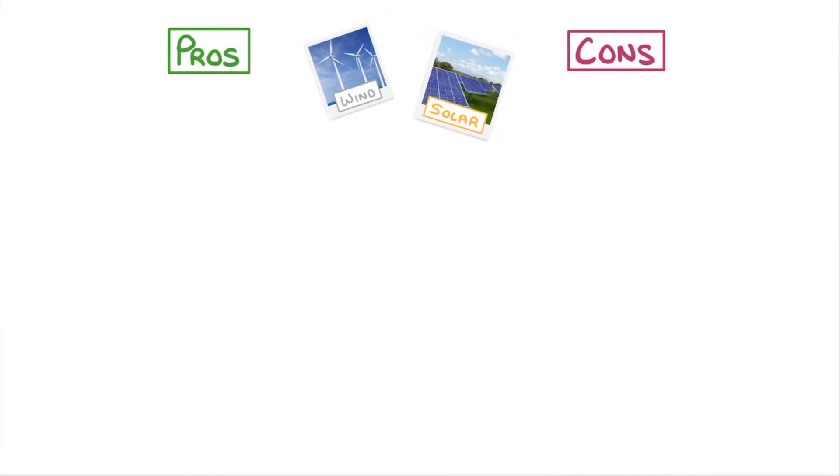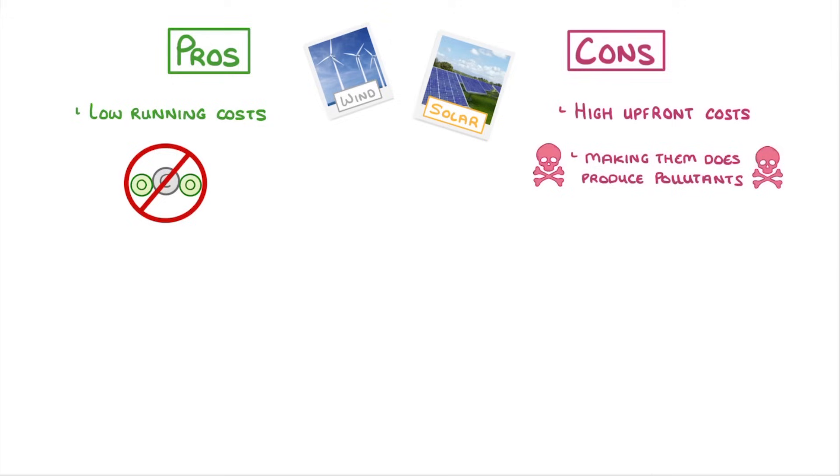Now the pros and cons of wind and solar energy are pretty similar. Both of them have very low running costs and don't produce any pollutants, which importantly means no carbon dioxide. However, they do both have high upfront costs and the process of making them often does produce pollutants, particularly making solar cells.